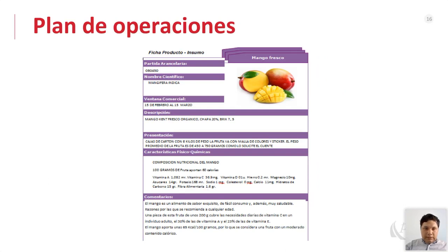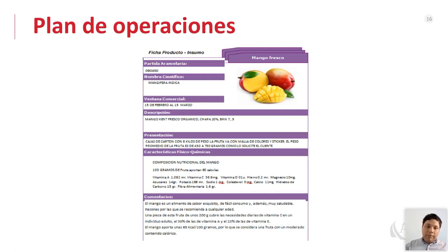Aquí hay una ficha de producto del Planex para el mango. Incluye la parte arancelaria, nombre científico (Mangifera indica), ventana comercial (en Perú se cosecha de enero a febrero/marzo), descripción: mango Kent fresco, orgánico, con 20% de chapa y Brix de 7.5. Presentación en cajas de cartón con 5 kilos con malla de colores y sticker. El peso promedio de la fruta es de 450 a 750 gramos según solicite el cliente. Además, incluye características físico-químicas y composición nutricional: calorías, vitaminas, entre otras.